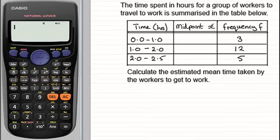The midpoint, which I'm going to call x. For this class interval the midpoint would be 0.5, so just put 0.5 in here. Between 1 and 2, the midpoint here would be 1.5, and between 2 and 2.5 it would be 2.25.